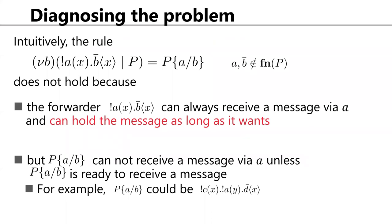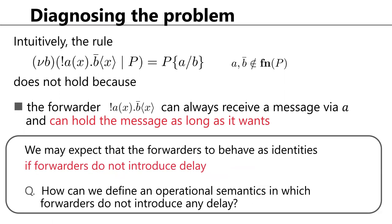To tackle the question, let us look at the problematic equational law. The law says that parallel composition of a private forwarder acts as a substitution for input names. This does not hold because the forwarder can always receive a message via name a and hold it, whereas the other process cannot receive a message via a unless it is ready — for instance, if the name a is guarded by name c. Since the delays that forwarders introduce seem to be the problem, we expect that forwarders behave as identities if they do not introduce any delay.